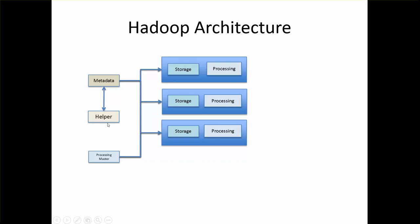The top two master components are for storage and the bottom one is the processing master. When replacing with actual Hadoop terms, the storage components are considered as HDFS, and these are the HDFS masters. For processing, they are called MapReduce. MapReduce can be supported by Yarn or MapReduce Classic — there are two flavors, and we will understand those in detail later.